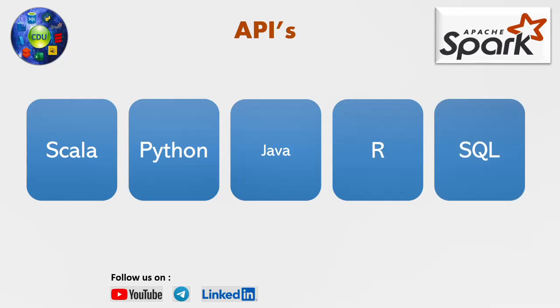Out of these five, except SQL — meaning Scala, Python, Java, and R — these are all programming languages. SQL is a query language, not a programming language, so keep that in mind.